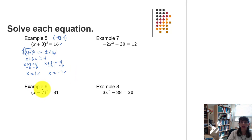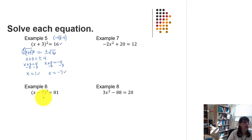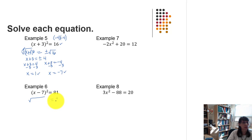Example 6 is very similar. We have the quantity x minus 7 squared equal to 81. To undo the squaring, we take the square root of each side of the equation, remembering to write plus or minus the square root of 81 on the right.